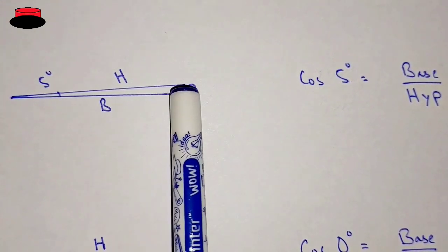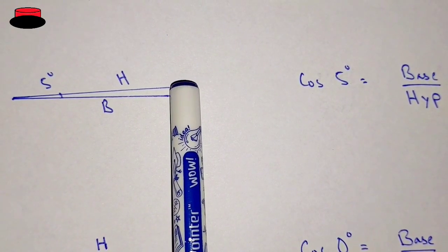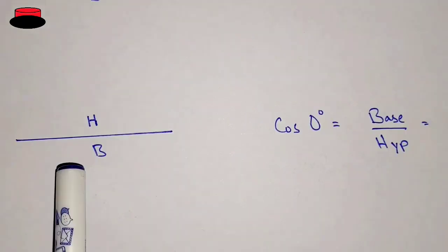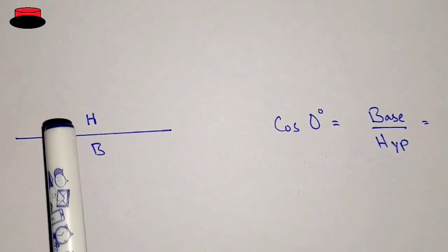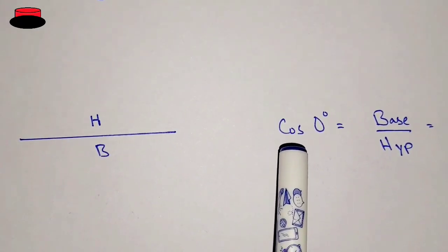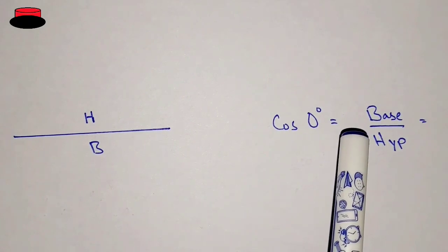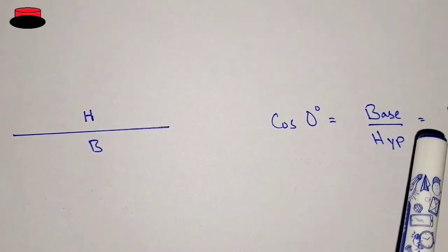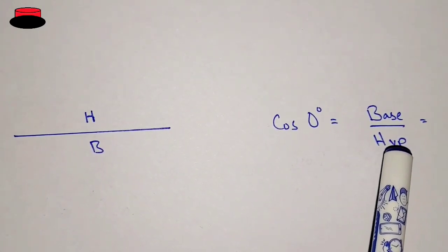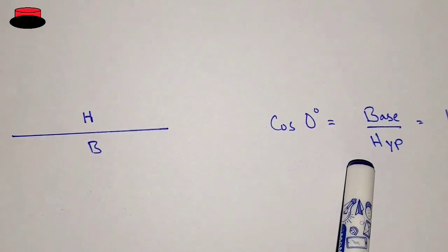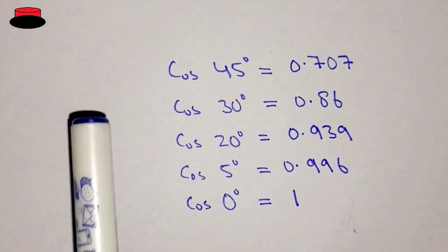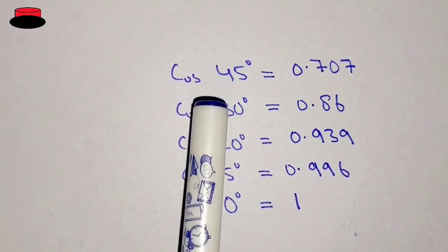Now let's decrease the length of the hypotenuse a little more. In this figure you can see the length of the hypotenuse is the same as the length of the base. In this case, cosine 0 degrees equals base over hypotenuse. Since the base and hypotenuse are equal, they cancel, and the result is 1. So cosine 0 degrees is equal to 1.